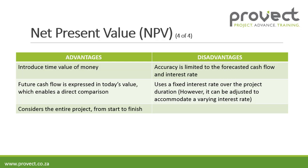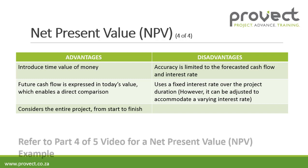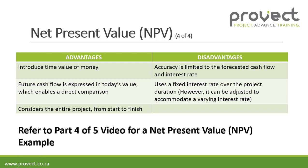The advantages of net present value are that it introduces the time value of money, future cash flows are expressed in today's value enabling direct comparison, and it considers the entire project from start to finish. The disadvantage is that its accuracy is limited to the forecasted cash flow and interest rate. It can, however, be adjusted to accommodate a varying interest rate. You can go to part four of five on YouTube to watch a net present value example.